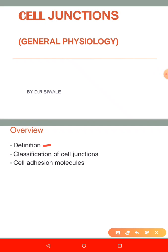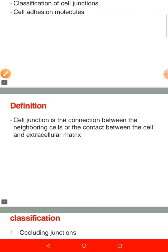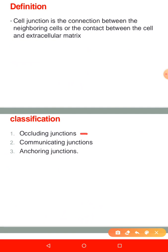The cell junction is defined as the connection between cells, or a connection between a cell and the extracellular matrix. In terms of classification, cell junctions are classified into three types: occluding junctions, communicating junctions, and anchoring junctions. To occlude means to prevent or stop. Communication involves exchange of information — in this case, cells exchange information in the form of ions and molecules. Anchoring junctions provide support.